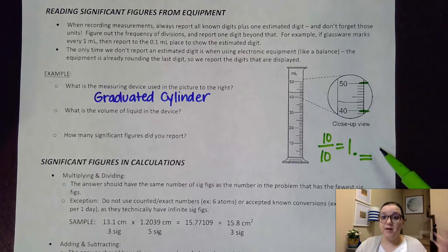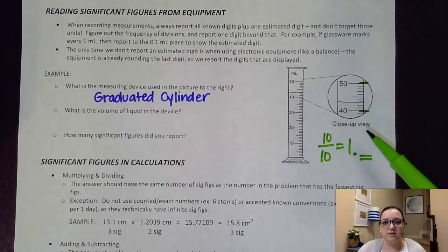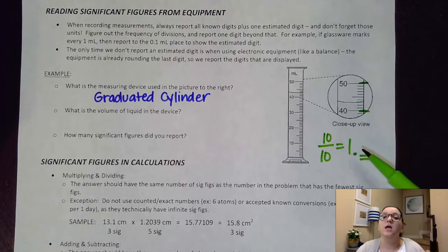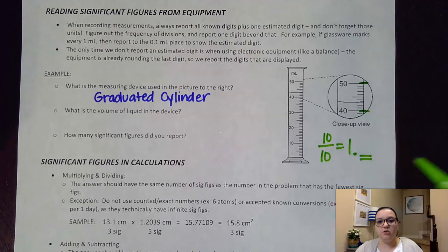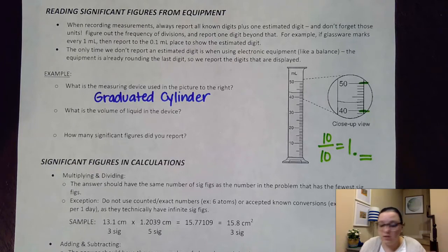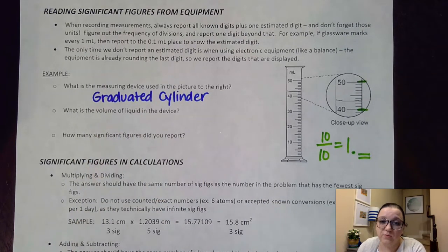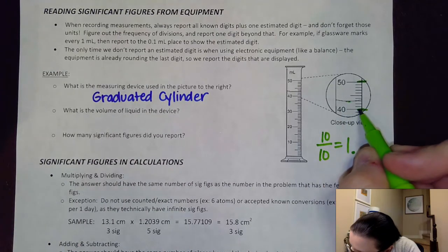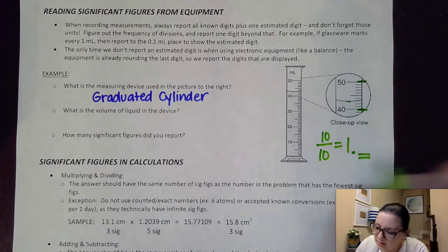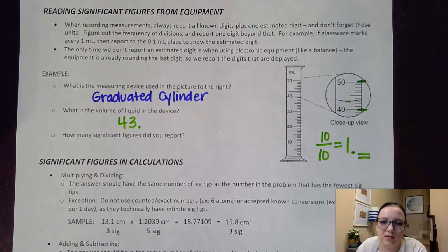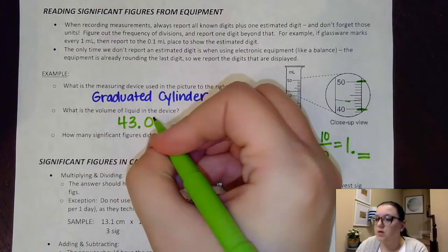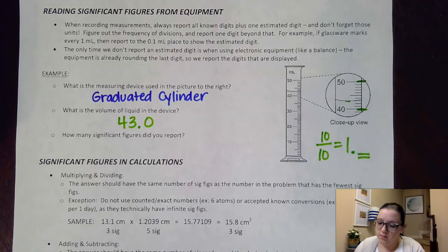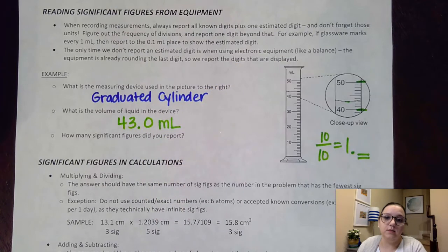Your estimated digit might be different from somebody else's, and that's okay. On the AP test, they would give you a window of appropriate numbers. I'm reporting the volume of liquid in this device — remember, we always read from the bottom of the meniscus. Here's my meniscus; I see it's hitting about 41, 42, maybe right around 43. I feel like it's marking on the line, so I'm going to put 43.0 to show that reading is exactly on the line. Of course, I put a unit with it — in the case of a graduated cylinder, I'd put milliliters.